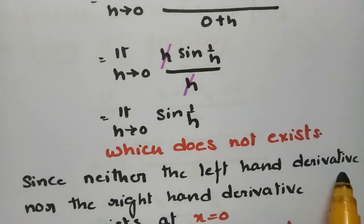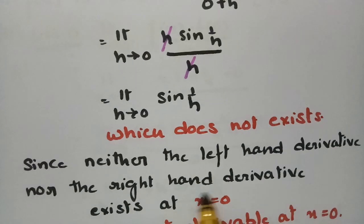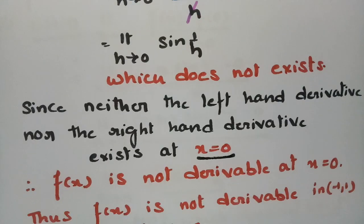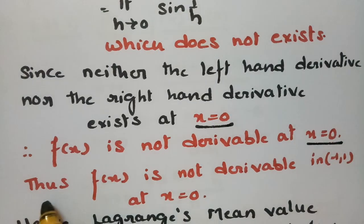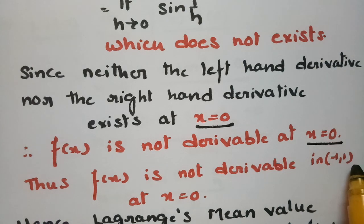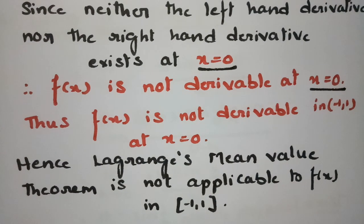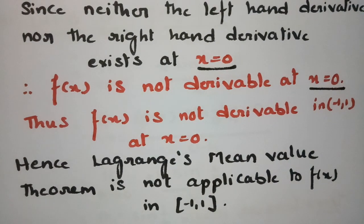Since neither the left-hand derivative nor the right-hand derivative exists at x = 0, f(x) is not derivable at x = 0. Thus f(x) is not derivable in the open interval (-1, 1). Hence Lagrange's mean value theorem is not applicable to the function f(x) = x·sin(1/x) in the closed interval [-1, 1].